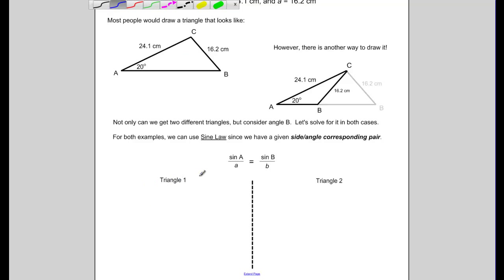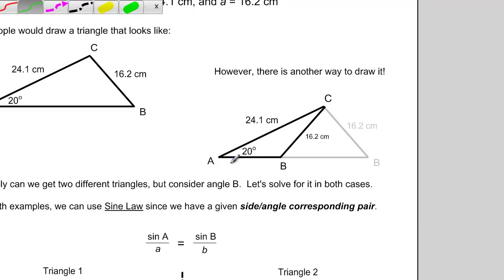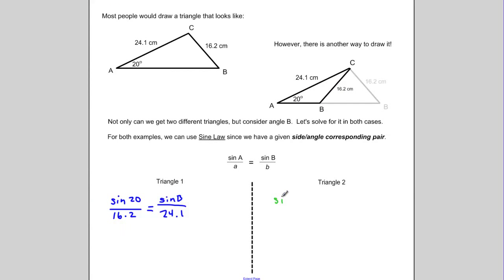So for triangle 1, I'll start with my side that I know and my angle that I know. So I know I'm given angle 20 here, 20 degrees. So sine of 20 degrees over my side of 16.2. Well that's going to equal, and of course I'm solving for angle B here, so I don't know the angle, but I do know the side 24.1 corresponds to it. If I were to set up the sine law for my second triangle, again I'll have sine A over side A, or sine of 20 over 16.2. And that's going to equal angle B, I don't know, so sine B over 24.1.